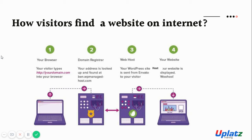When you type that address, the browser then tries to fetch information about that particular domain from the domain registrar. This address that you type is called the domain or domain name. The domain registrar looks up your address and finds it. For example, something like ben.wpmanagedhost.com. Hosts are the places where your website resides — they accommodate your website for a fee, depending on the space your website requires.